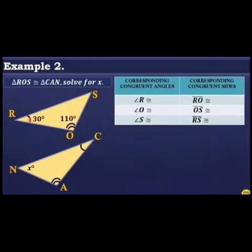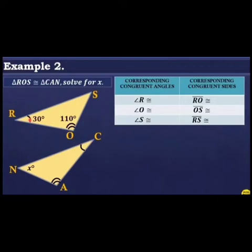We are done with the presentation and identification of solving corresponding parts of congruent triangles. Now we will solve its corresponding parts. Try this first in your notebook, and after answering the problem, you can check your answer in the second part of this video lesson. Your goal is to find the corresponding congruent angles and corresponding congruent sides, then solve for X. See you in Part 2 — stay tuned, Grade 8!